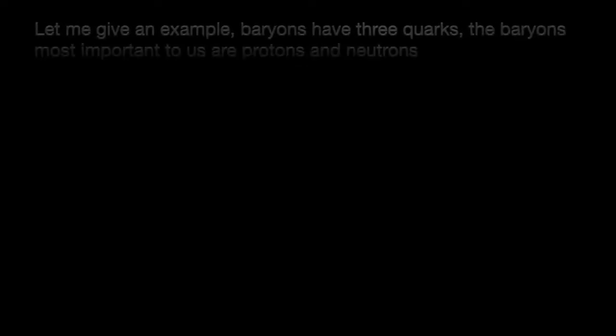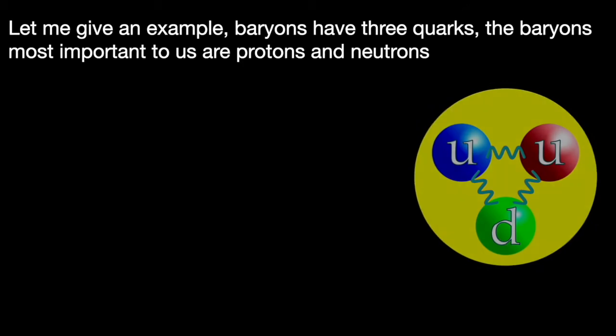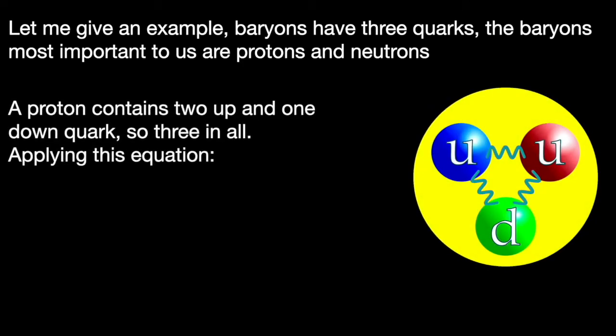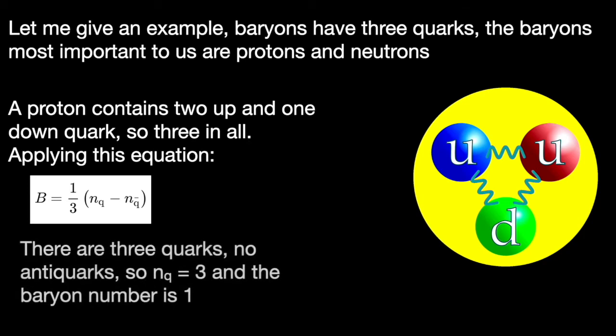Let's take a couple of examples of calculating the baryon number. I'll start with the two baryons which are most important to us. That is the proton and the neutron. Baryons have three quarks. A proton contains two up and one down quark. So three in all. If we apply this to the equation NQ is three. NQ with a bar is zero. So a third of three is one.